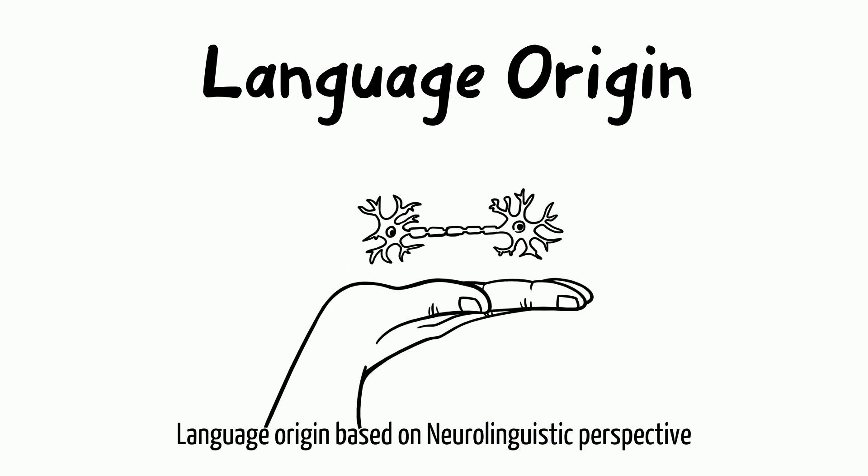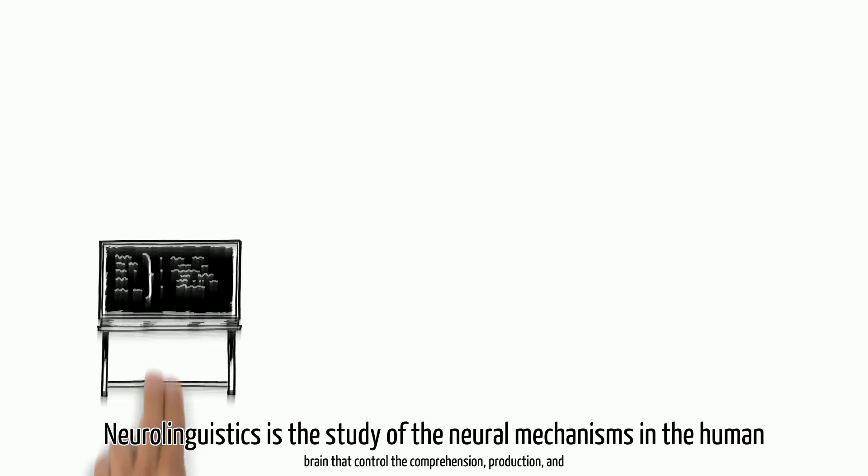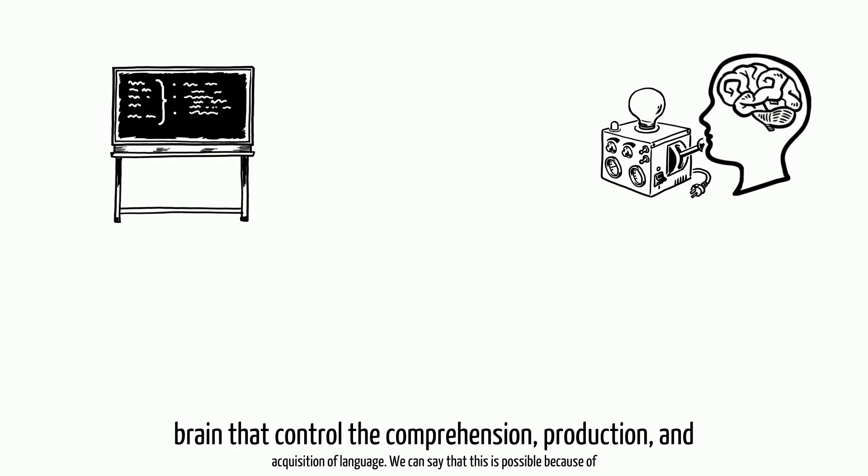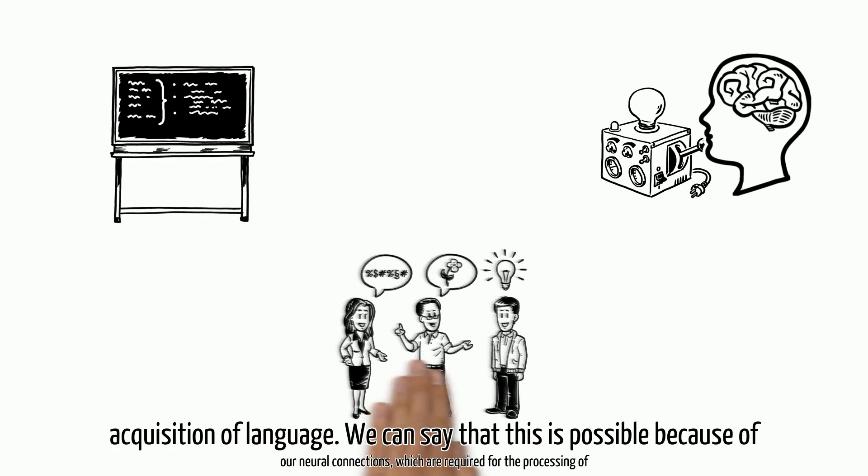Language Origin Based on Neurolinguistic Perspective. Neurolinguistics is the study of the neural mechanisms in the human brain that control the comprehension, production, and acquisition of language.